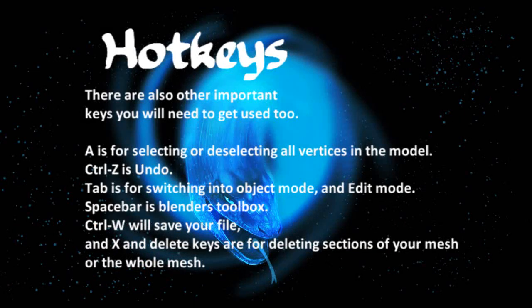There are also other important keys you will need to get used to as well. A is for selecting or deselecting all vertices in the model. Ctrl Z is undo. Tab is for switching into Object Mode and Edit Mode — remember that. Spacebar is Blender's toolbox. Ctrl W will save your file, and X and Delete keys are for deleting sections of your mesh. When deleting sections of your mesh, you need to select the vertices that you want to go away.